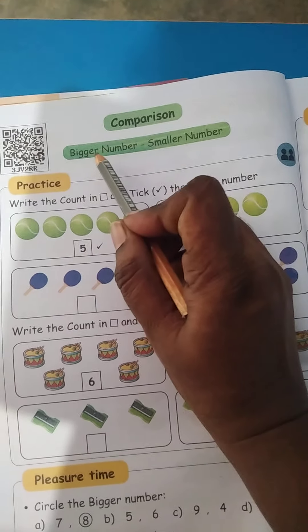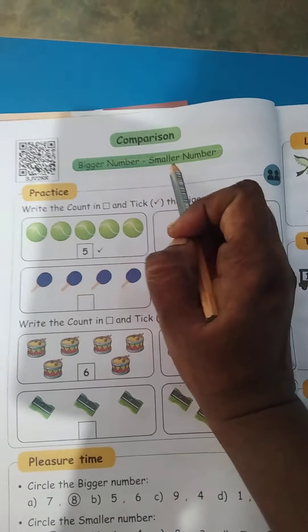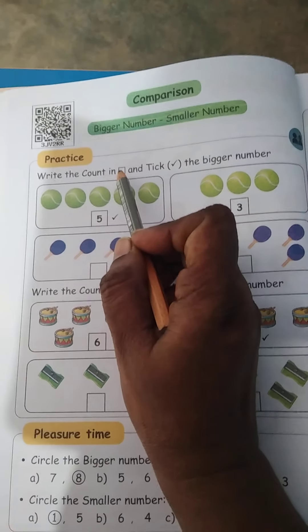Welcome to Little Pharmaid Ecclesian School, Kattour Made First Standard, First Term. Today's topic is Comparison, Bigger Number, Smaller Number. Bigger Number means Period Number, Smaller Number means Chinna Number.